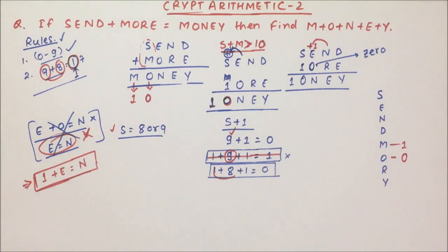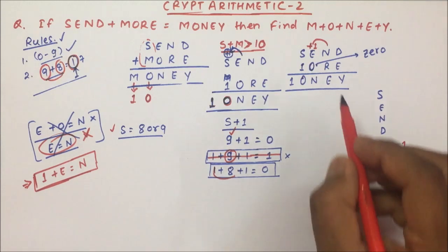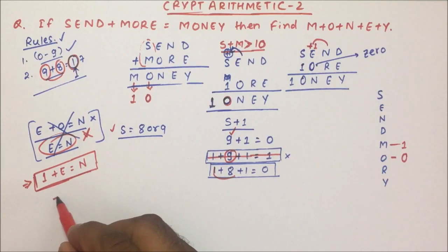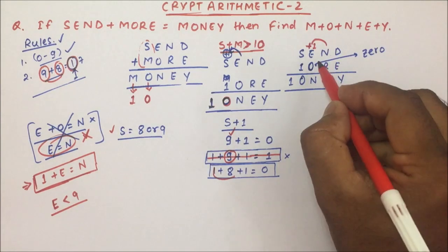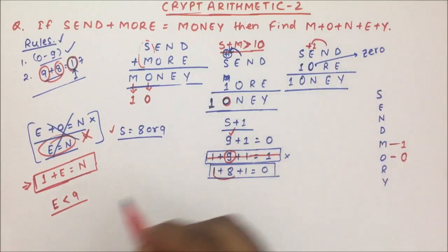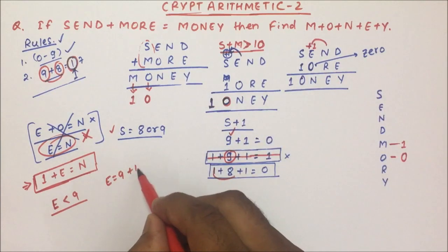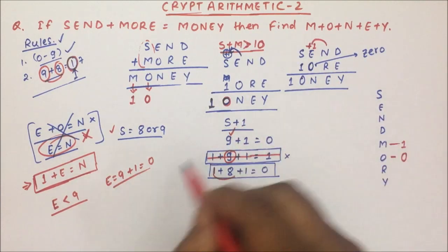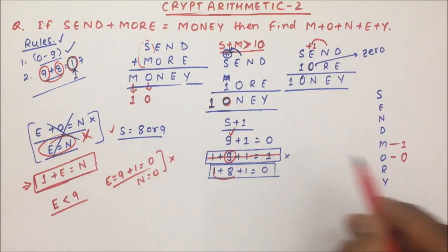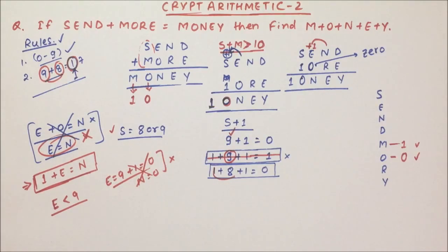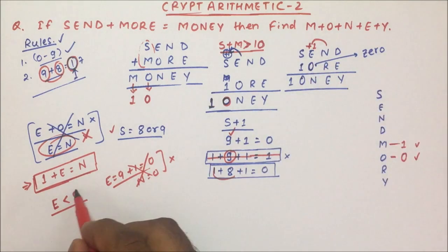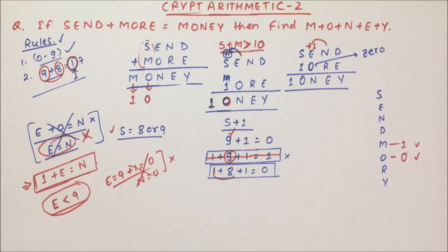So 1 plus E equals N. Also, the value of E will definitely be less than 9. If E were 9, then 9 plus 1 would equal 10, making N equal to 0 — but we already know O equals 0, so N cannot equal 0. Therefore it is clear: E must be less than 9.